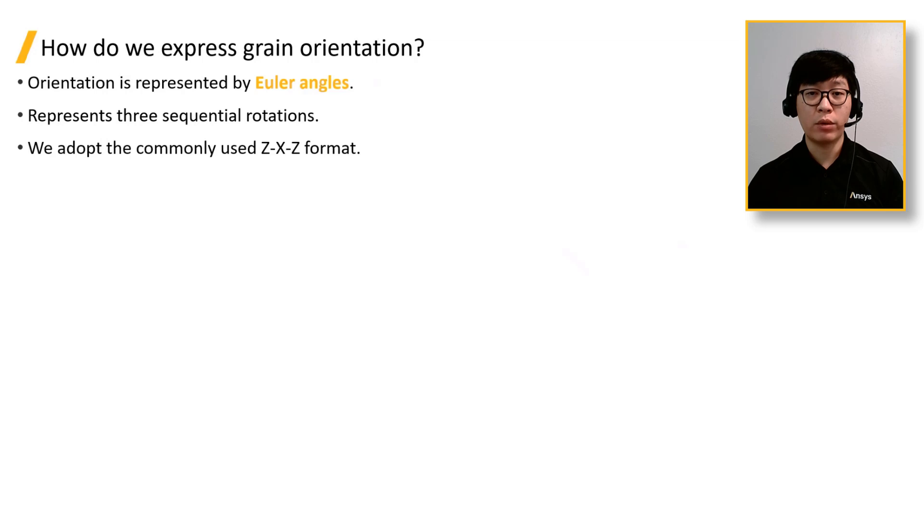It represents three sequential rotations in a coordinate system fixed to the moving body. We adopt the commonly used ZXZ format, meaning that the first and last rotation is about the local Z axis, while the second rotation is about the local X axis.